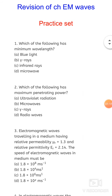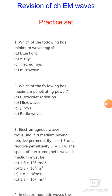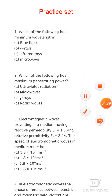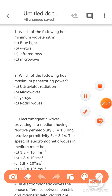Let's start the practice of the chapter. The first question: which of the following has minimum wavelength? The most minimum wavelength means the highest frequency and the highest penetration power — the lower the wavelength, the higher the penetration power and frequency. The options are blue light, gamma rays, infrared rays, and microwave. The most minimum wavelength and highest frequency is of gamma rays — option B is correct.